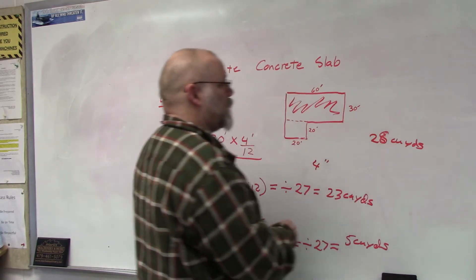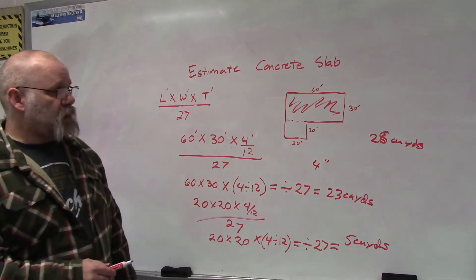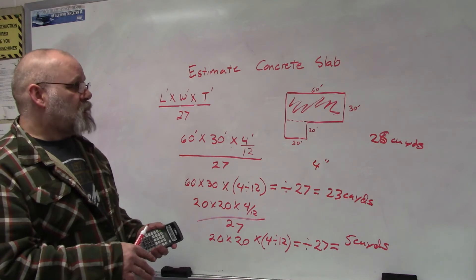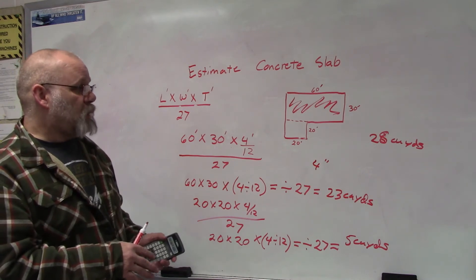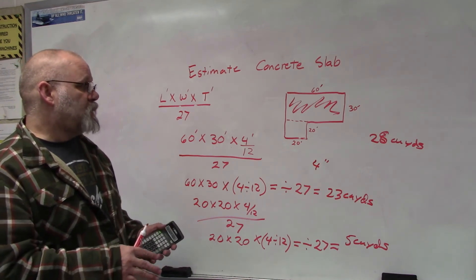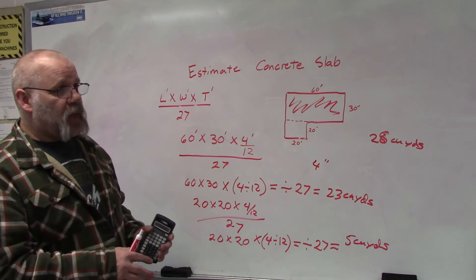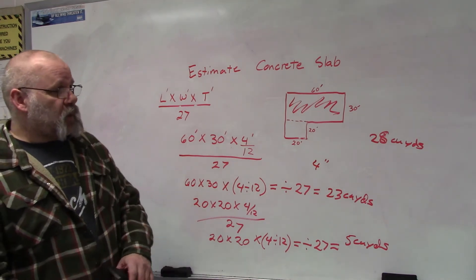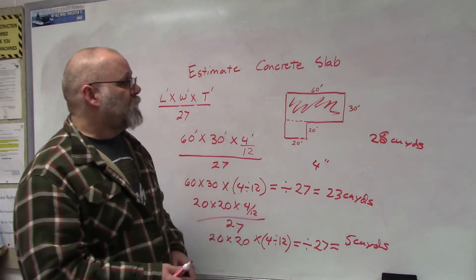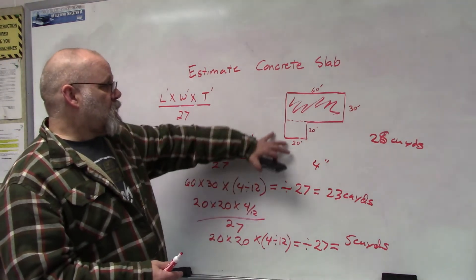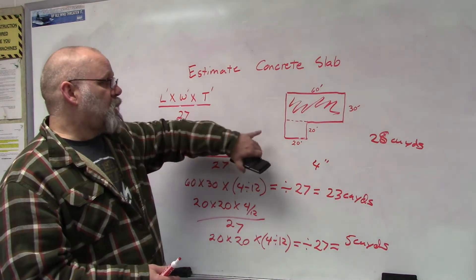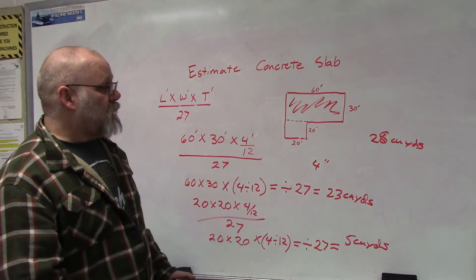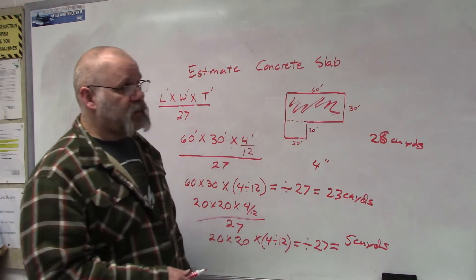Now when working with concrete, you always want to add for waste because you're going to have dips where it may take more, or you didn't quite figure the correct depth. You're going to be screeding some and it's going to fall in the dirt or whatever, so you always want to add. Usually the larger the area you're covering, the more waste you want to include in your calculations so that you have enough and you don't run out.